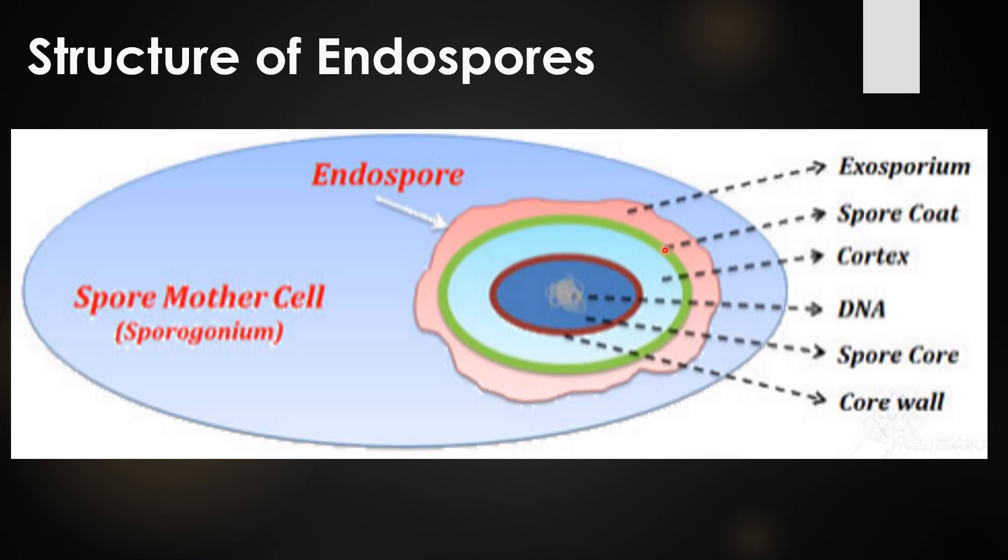The second region is the spore coat and the third region is the cortex. The cortex is a thicker wall layer in the endospores and it is very large, sometimes occupying as much as half of the spore volume. This cortex is composed of peptidoglycan, and the peptidoglycan in the cortex is less cross-linked than the peptidoglycan of normal vegetative bacterial cells.